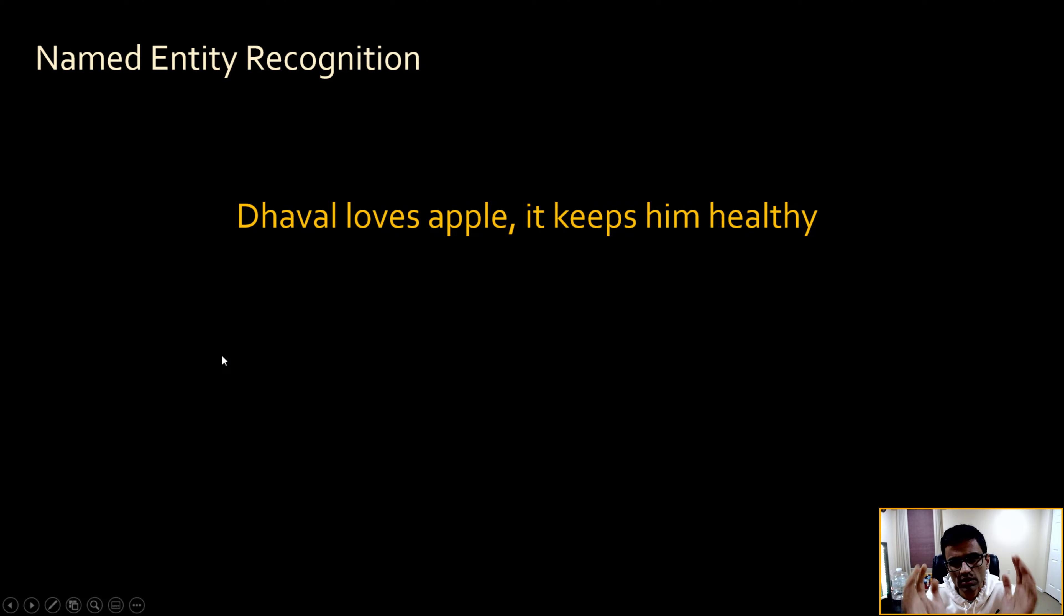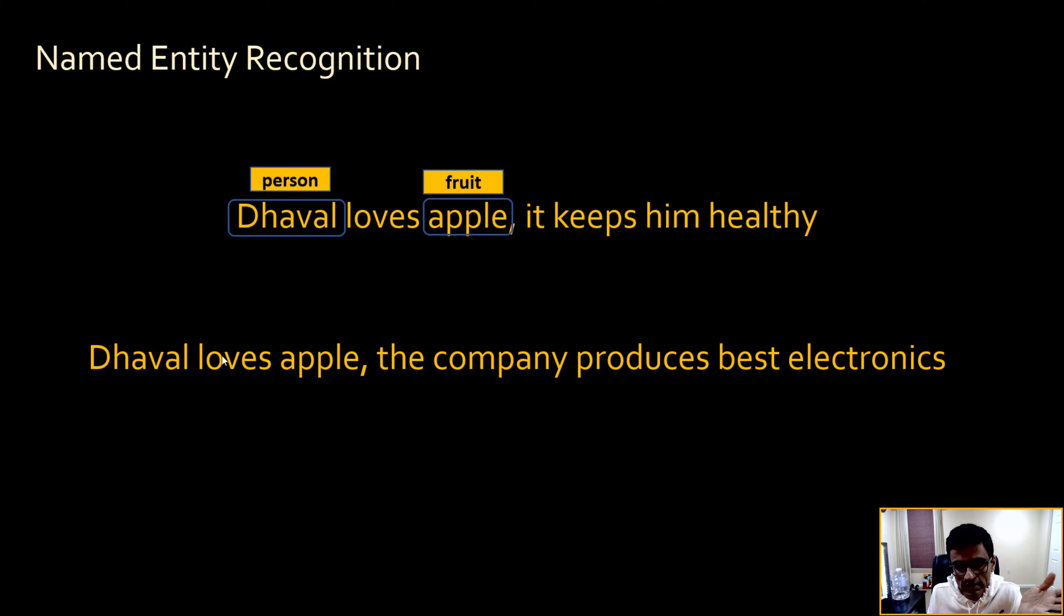Say you are working on a named entity recognition problem and you want to figure out what kind of entity the word Apple is. So here Apple is fruit and Dhaval is a person. But when you look at a different sentence like this, Apple here is a company, it is not a fruit.